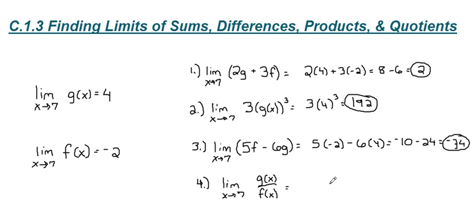For our last one, we have a quotient. The limit as we approach g was 4. The limit as we approach f as we get close to 7 was negative 2. 4 divided by negative 2 is negative 2. So there are four quick examples to show how we can find sums, differences, products, or quotients of limits.